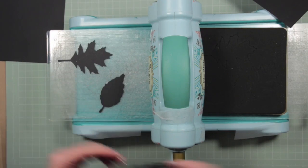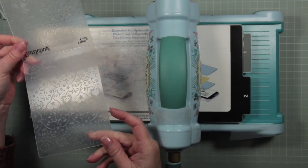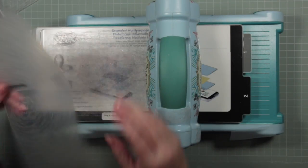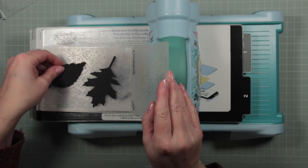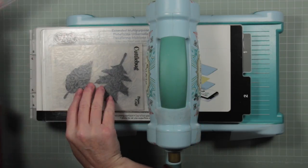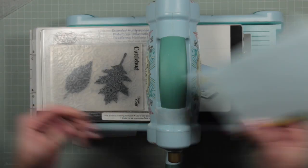Having cut out my flowers I'm going to run them through an embossing folder. Now this is an old cuttlebug embossing folder and all that really matters is that you have a tight texture, nothing that's too loose. You want to make sure that those leaves have got as much texture on them as possible.